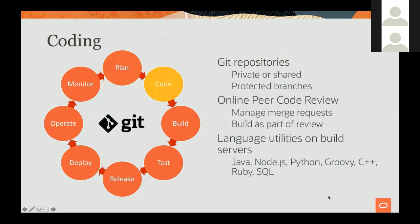Then we move over to the coding stage. You're going to develop your software or infrastructure code and store it in Git repositories. Part of Developer Cloud is your own private Git repositories. You can create multiple Git repositories in each project, and multiple projects. Git repositories can also be shared — for example, if you have an infrastructure team that builds reusable libraries that other teams would like to use. Otherwise, you can use a private Git repository where you fully control who has access to the code.